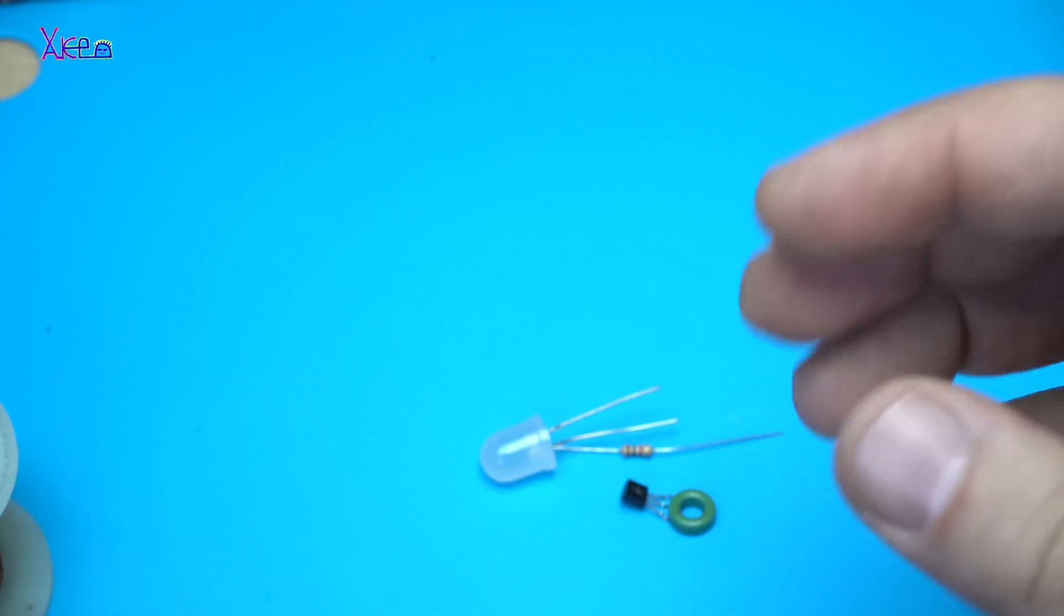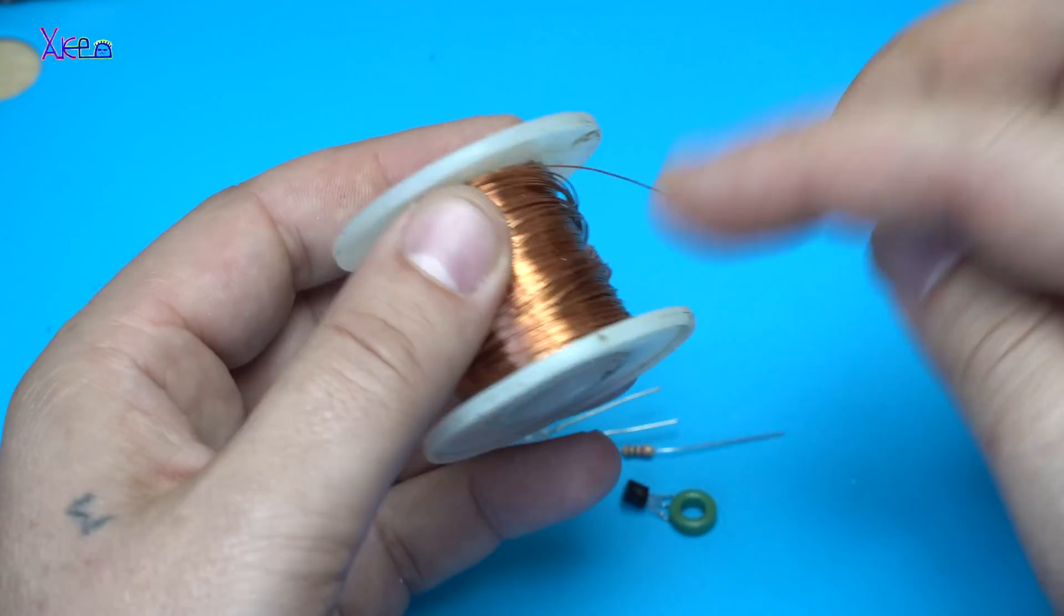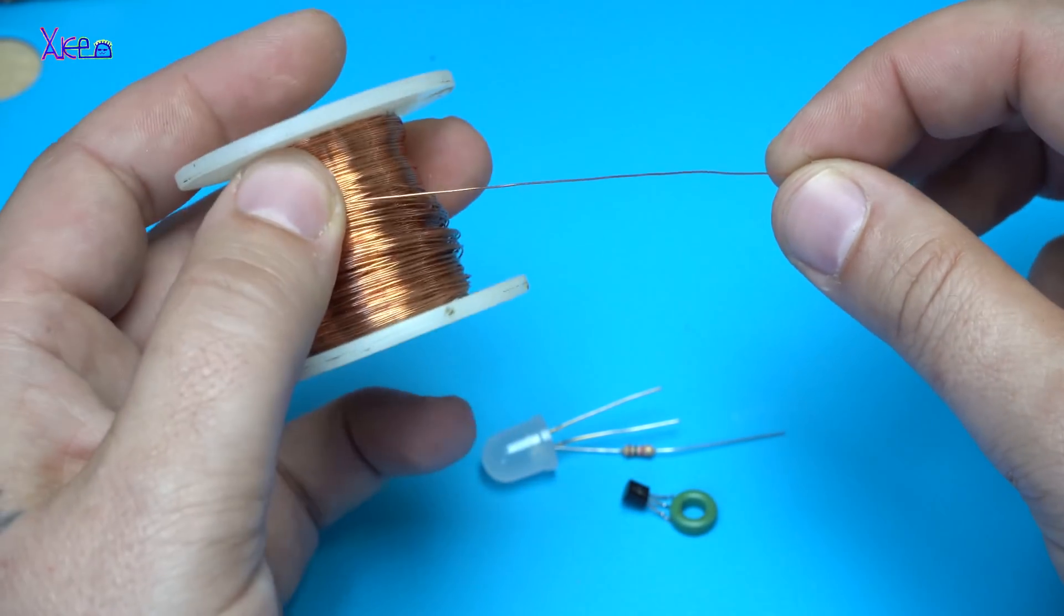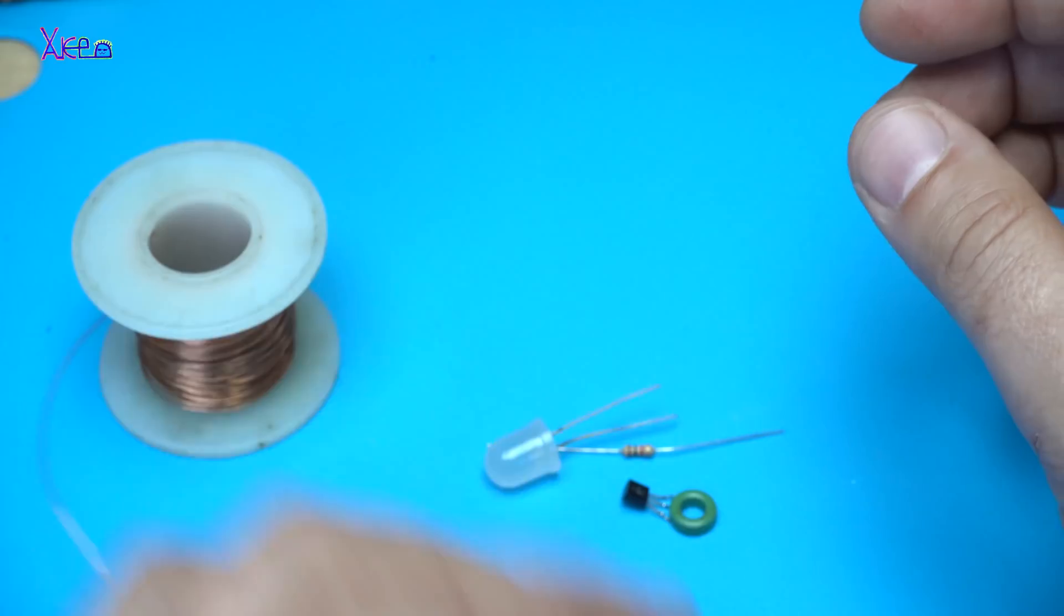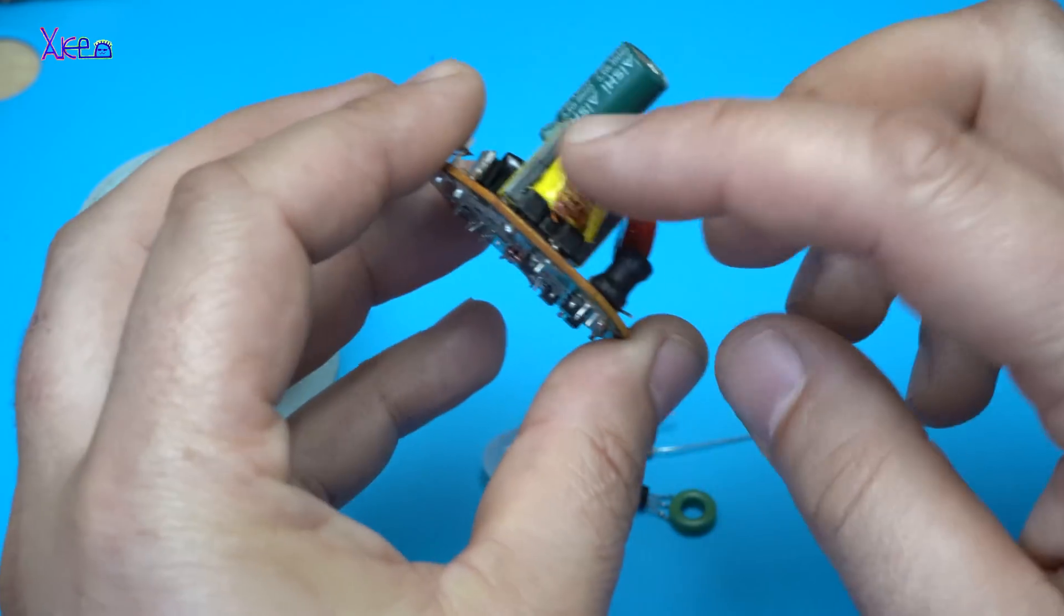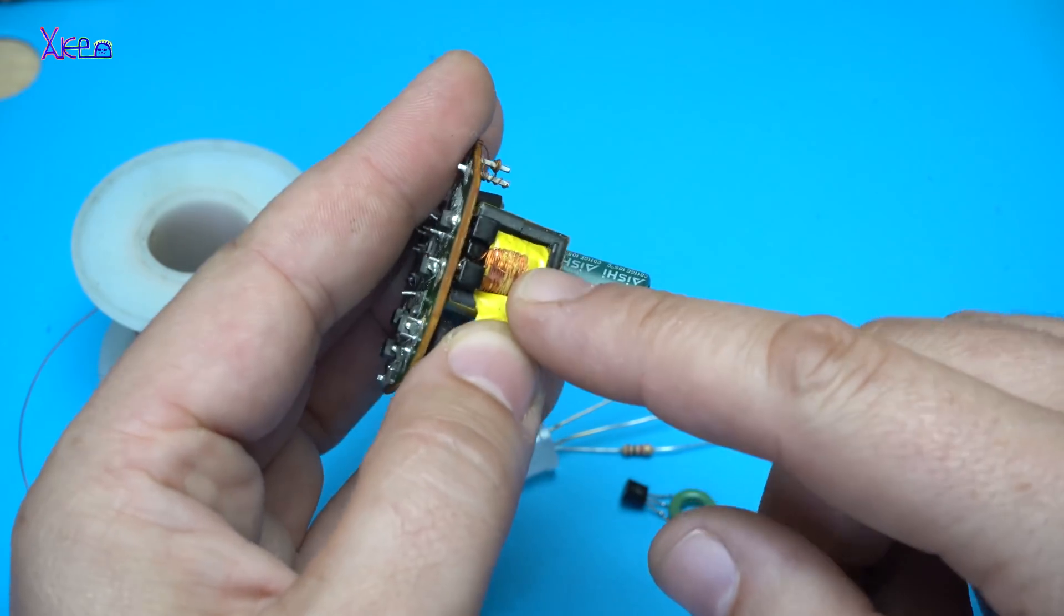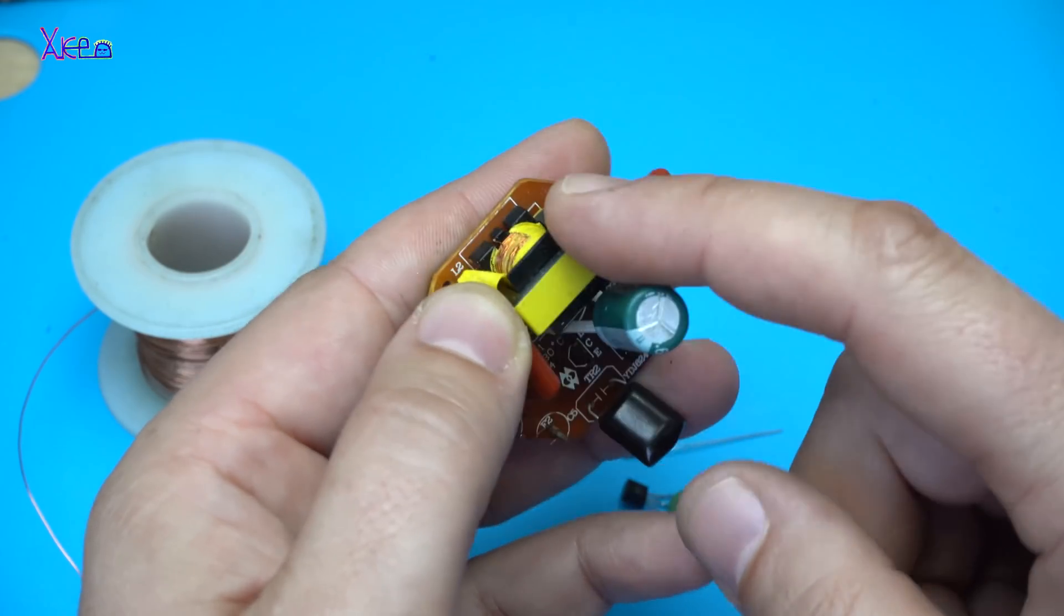And almost forgot that you will need also a copper wire, isolated copper wire. And if you don't have it, on this board from the CFL bulb, you can find the copper wire that you need on this small transformer.